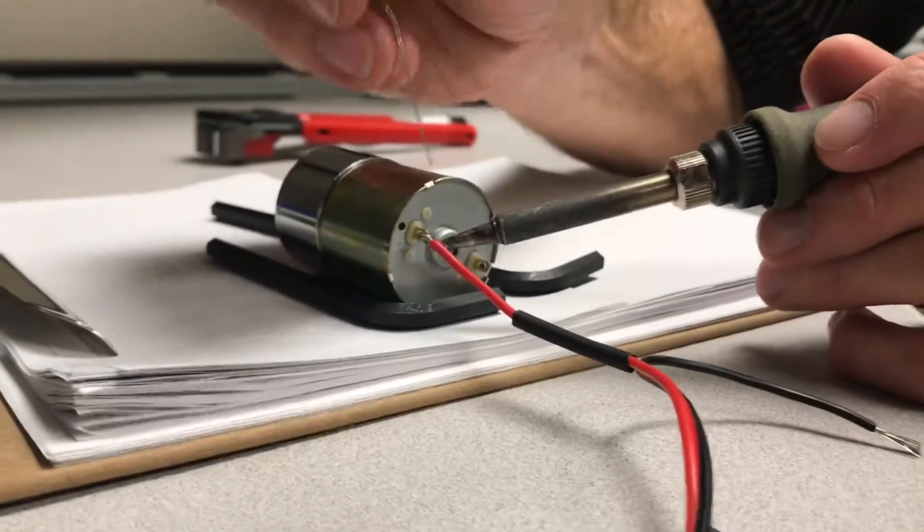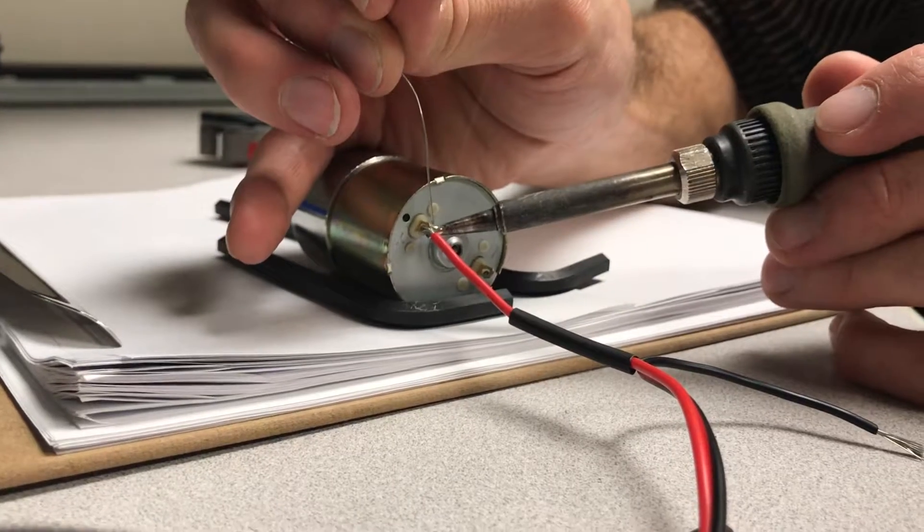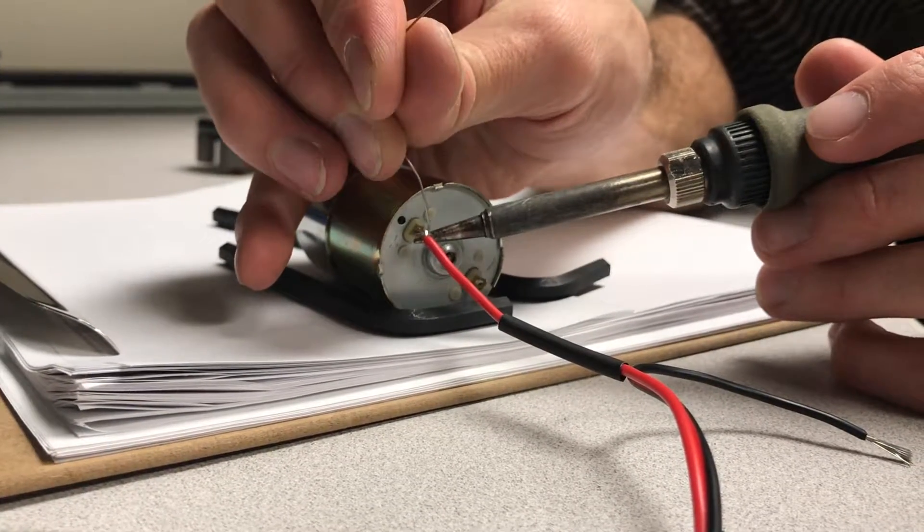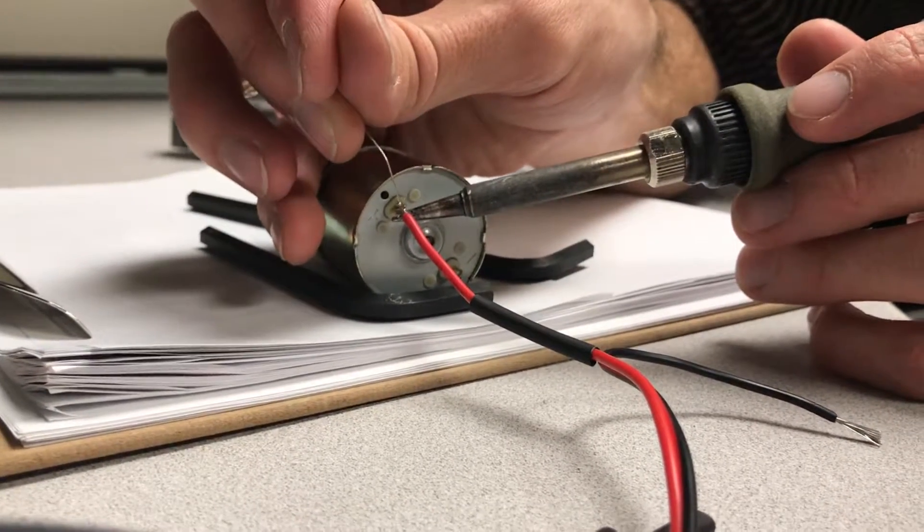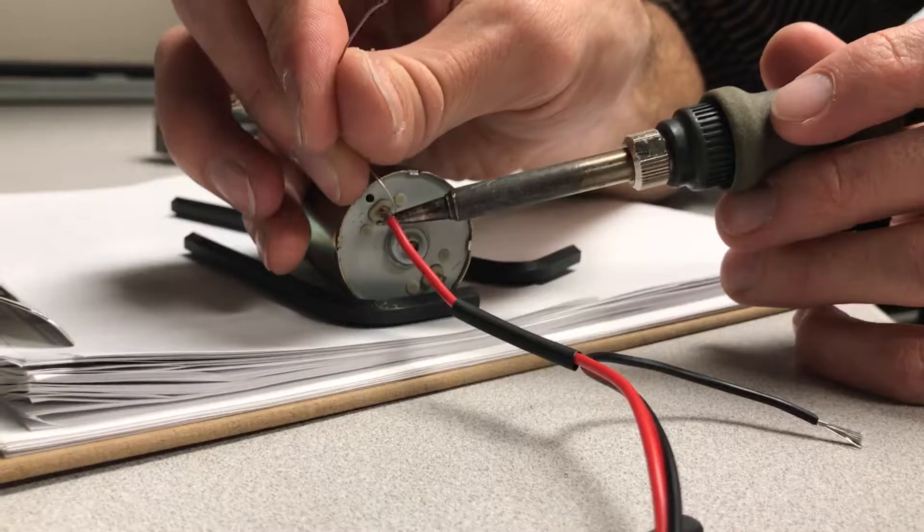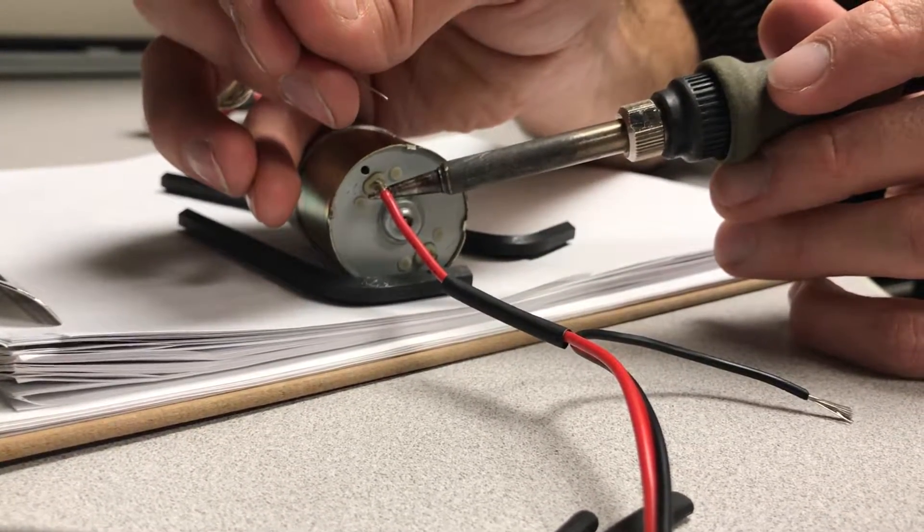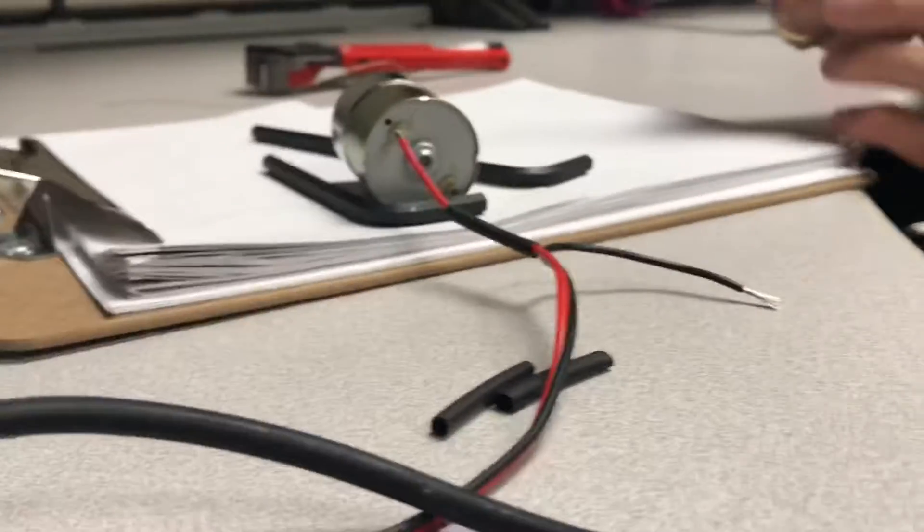It would really help to have the helping hands right now so you can hold your motor steady. Then just flow plenty of solder in there and let the solder saturate into the wire. As soon as the solder flows through all the strands, then release and let it cool.